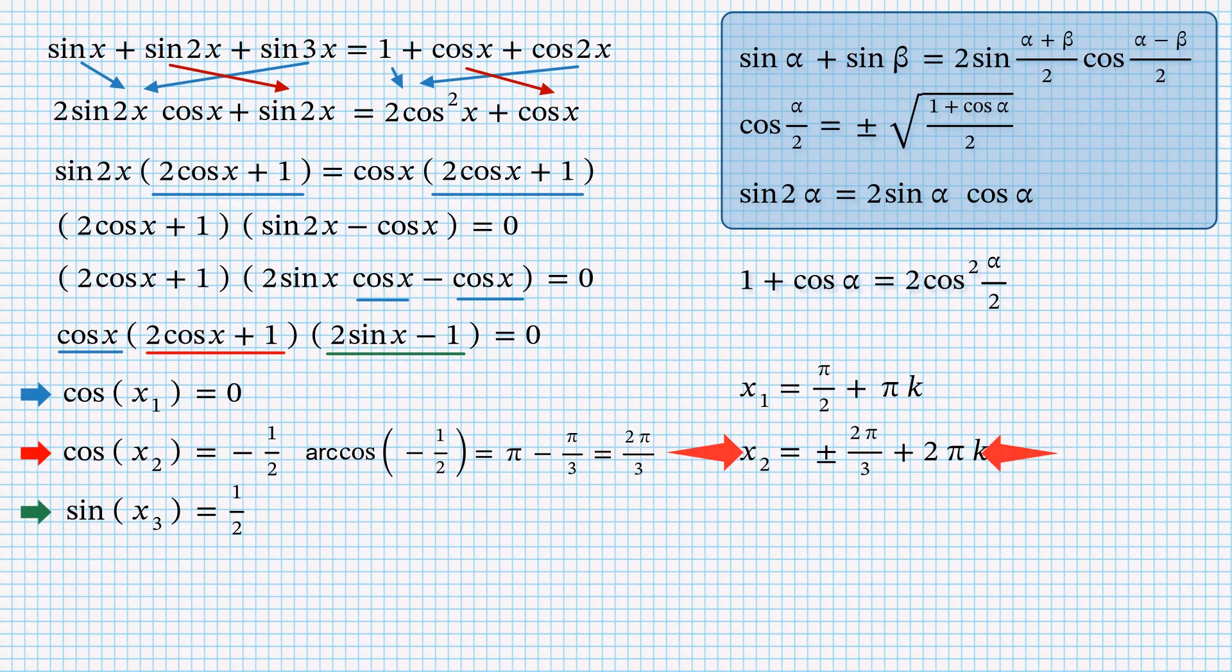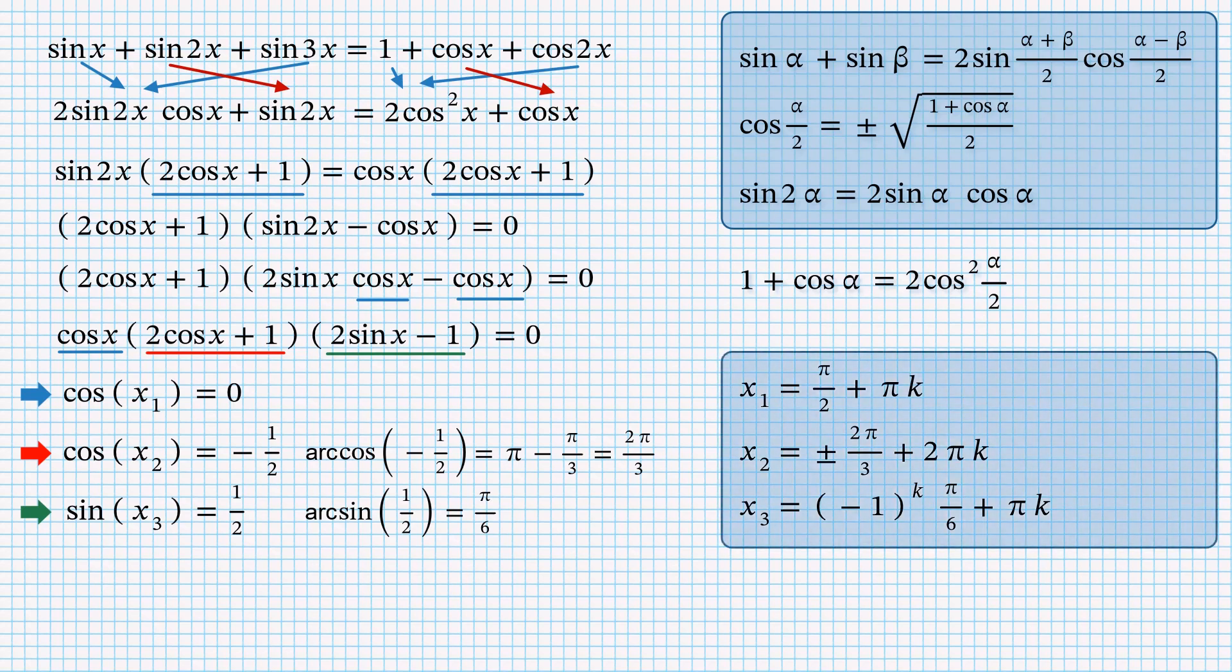Now to the last equation. Arc sine of negative half is pi over 6. This means that the students attending the exam wrote the answer as negative 1 to the power of k times pi over 6 plus pi k. Of course, k might be an integer for all cases. However, such annotation wasn't used at that time. So let's replace it in order to be consistent.